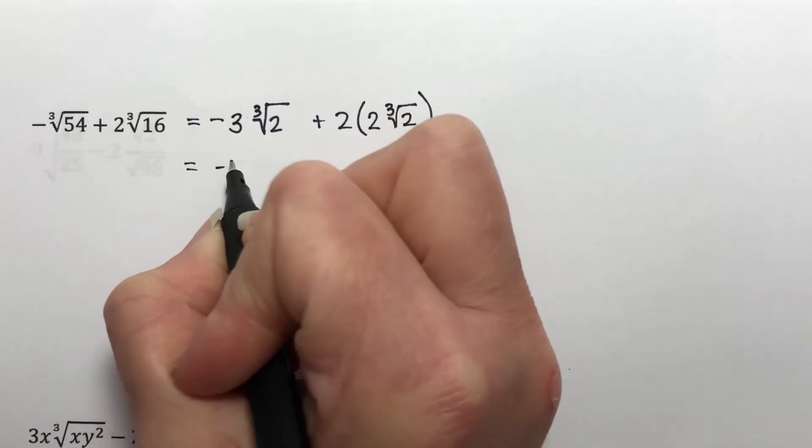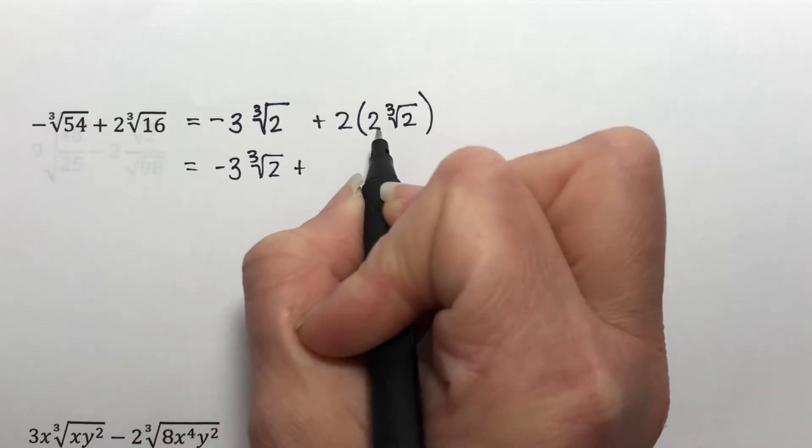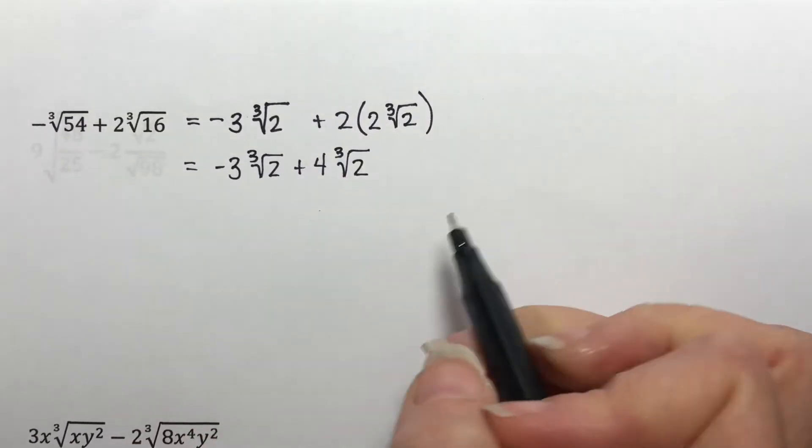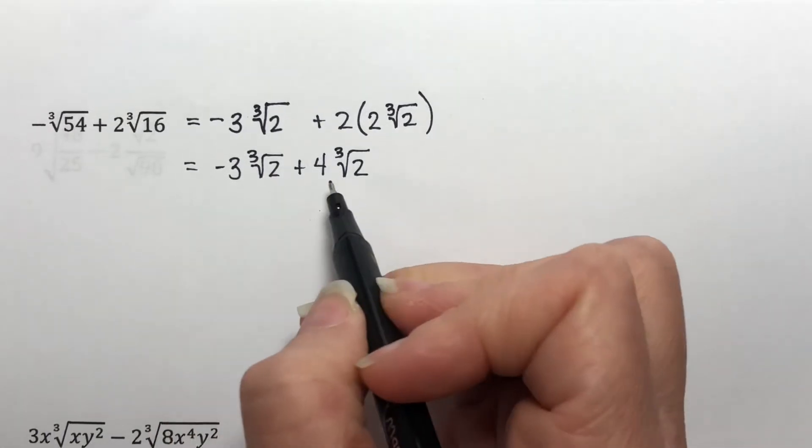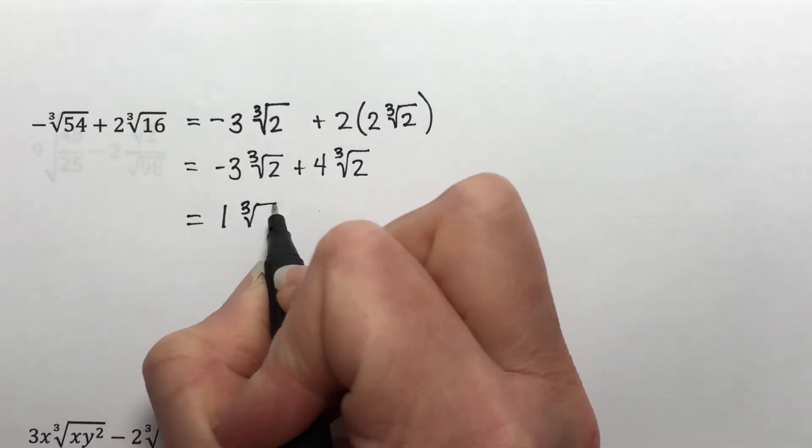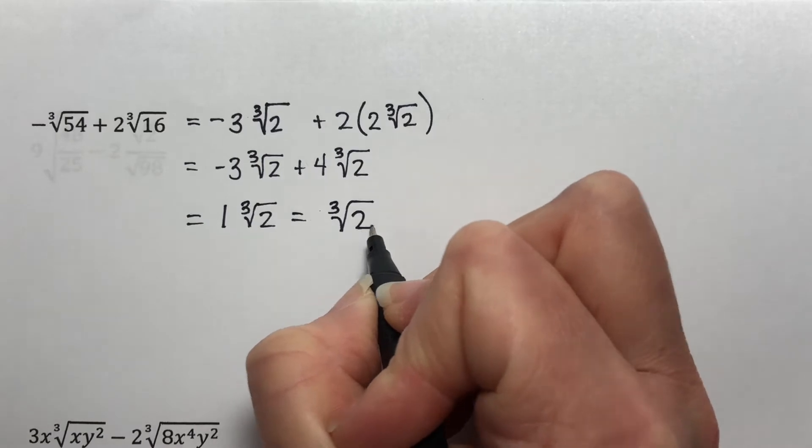So this is negative three times the cube root of two plus four times the cube root of two. Now we have exactly the same kind of root. So we can add in front negative three plus four is one. You could write this, but most of the time you're just going to write the cube root of two as your answer.